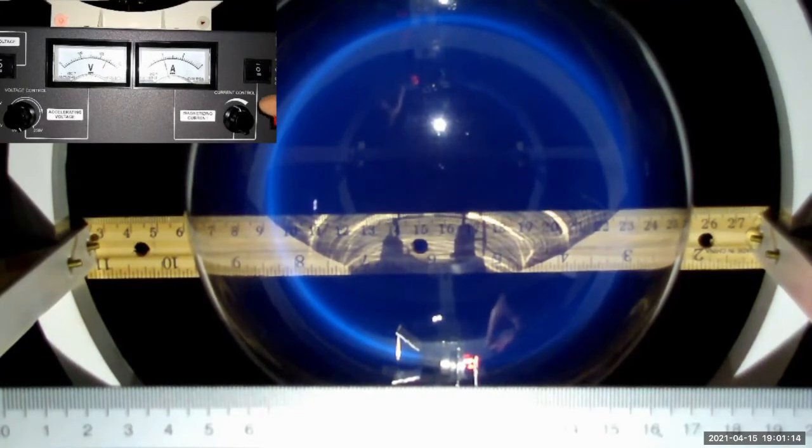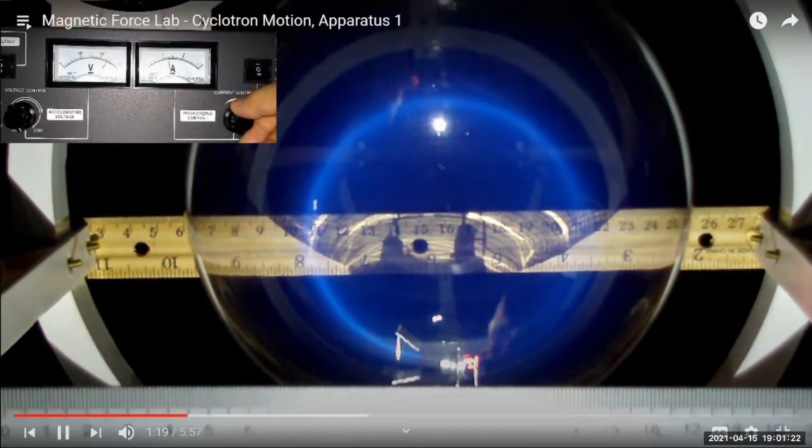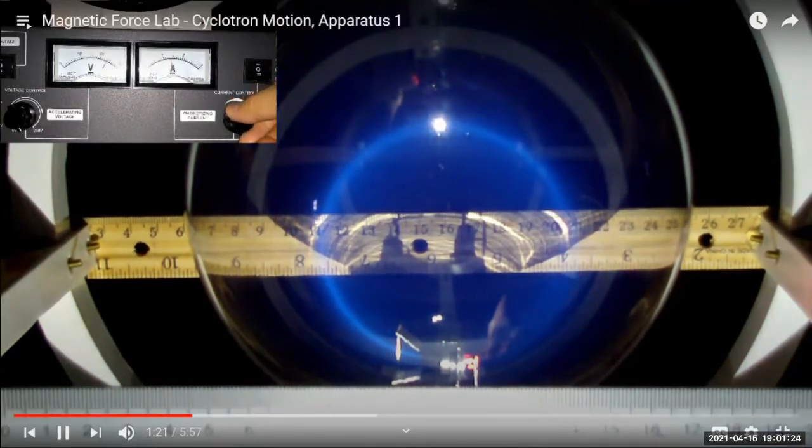And we will increase the magnetic field by 0.2 ampere increment. This is 1.2 ampere, 1.4 ampere. And this smaller radius loop indicates the magnetic force, the force that's providing the centripetal force is stronger. And it's stronger because the magnetic field is greater. And the magnetic field is greater because the electric current on the outside Helmholtz coils that's producing the magnetic field, the electric current is greater.